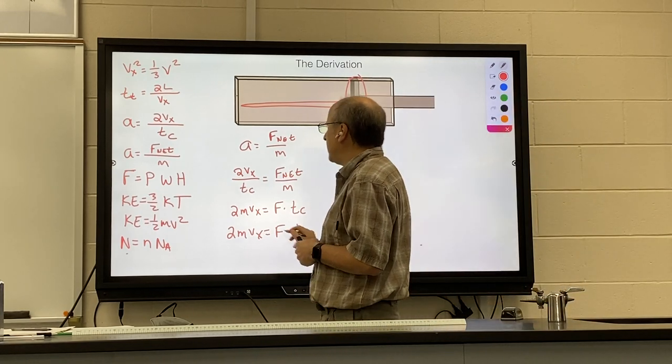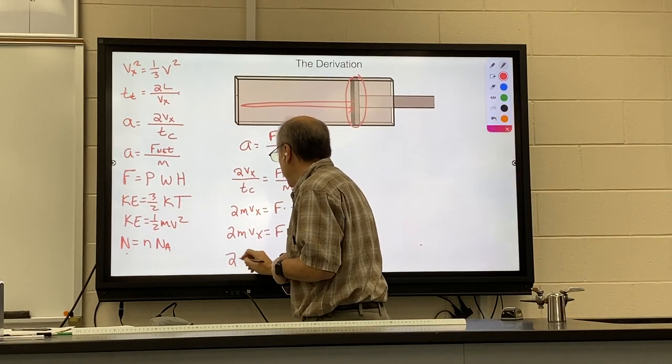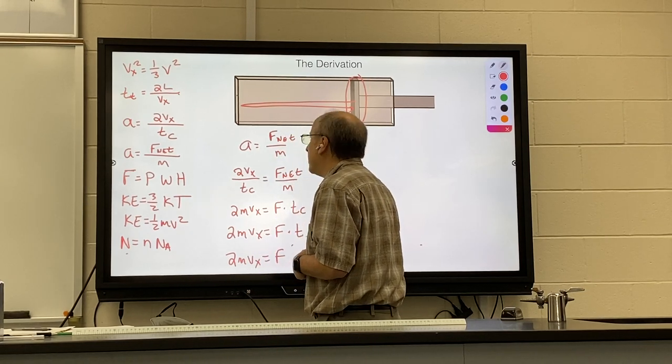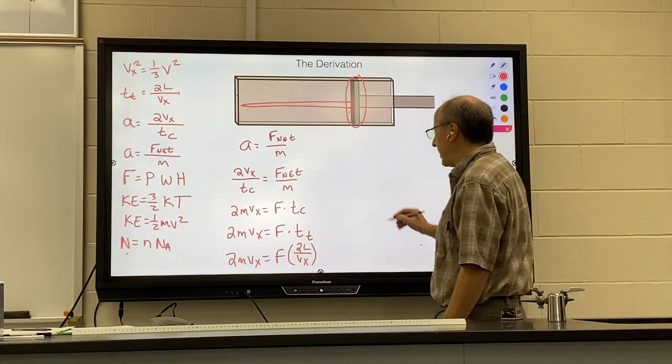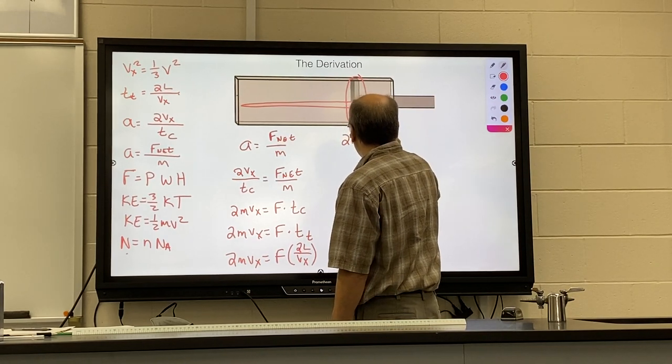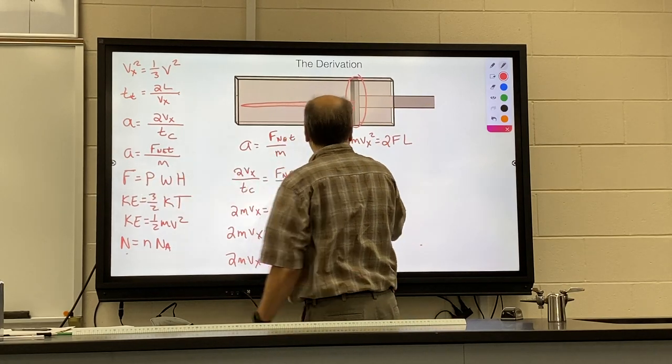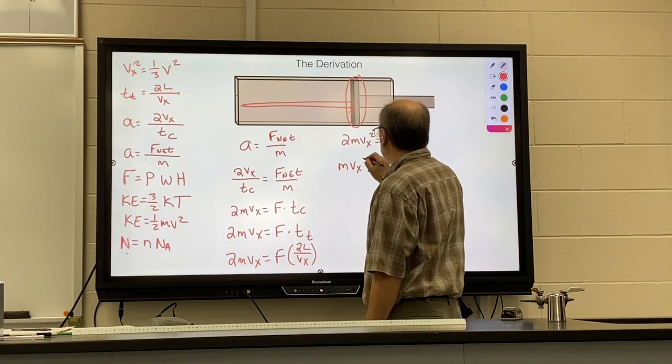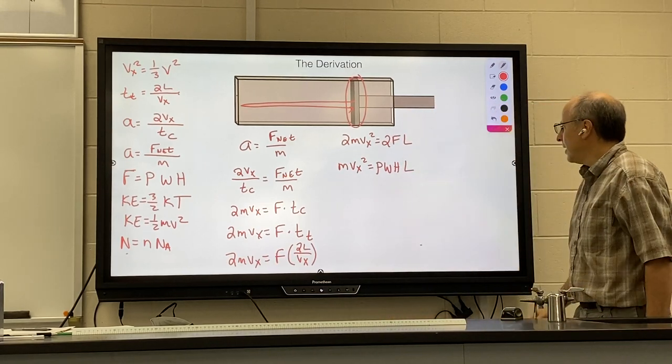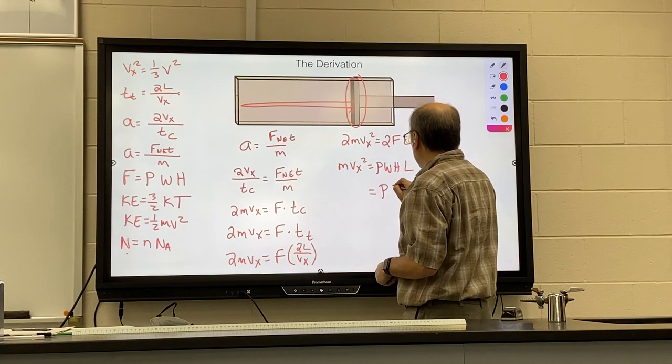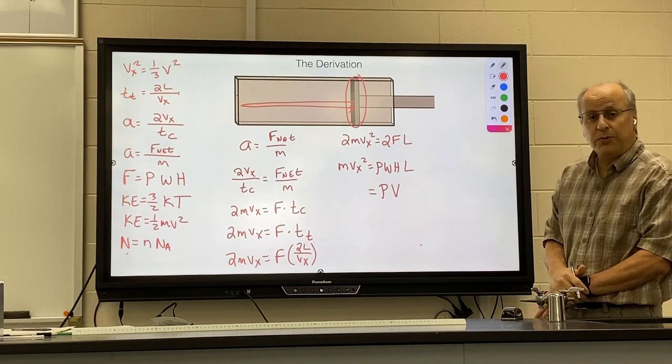What we're going to do next is we're going to get rid of the time between collisions, the time of our trips, by substituting in this one, and we get 2mvx equals force times 2L over vx. As we did before, clear out the fraction, cancel out the two's, replace force with the pressure expression. So we have mvx squared equals pressure times width times height times length. At this point, I hope you see that on this side, width times height times length is volume, and we're already at PV, which was half of the equation we wanted to prove was equivalent to our Newton's law.